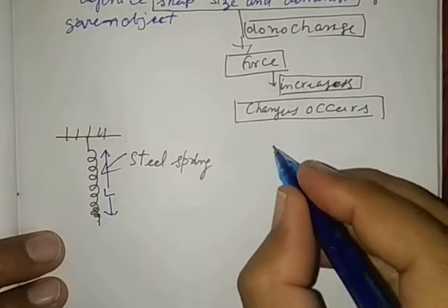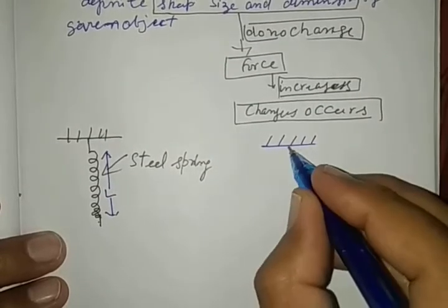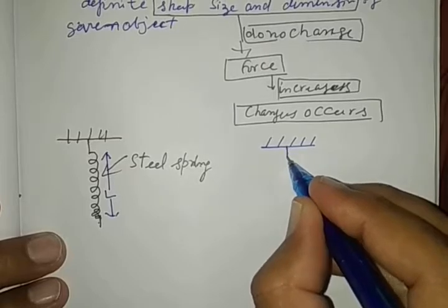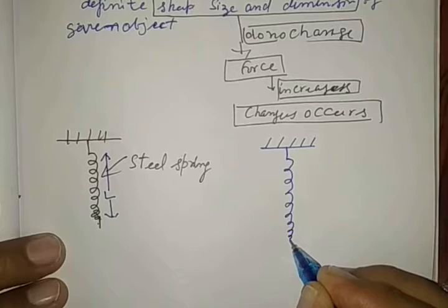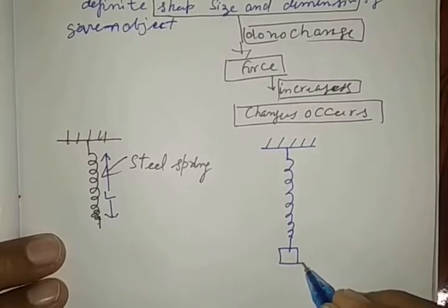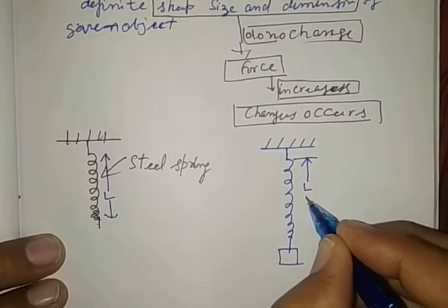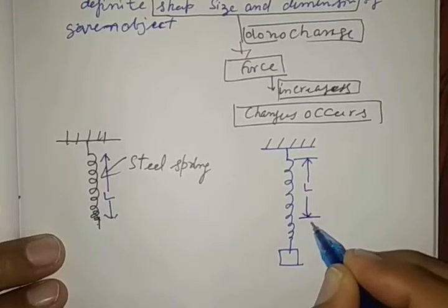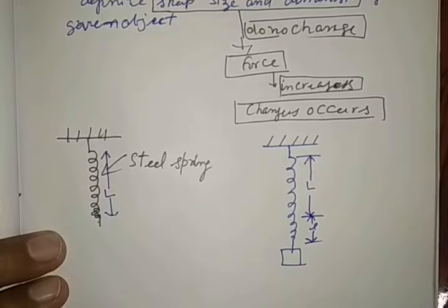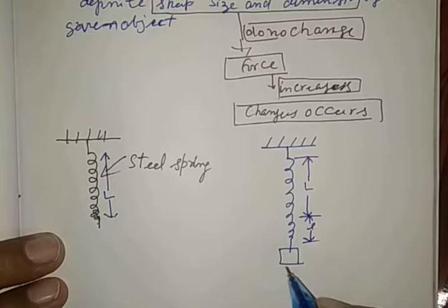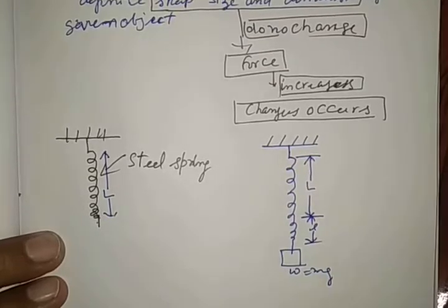When we suspend some load on this spring, this is observed that this spring is elongated. This elongation is of small L. It is due to the weight suspended on the spring.